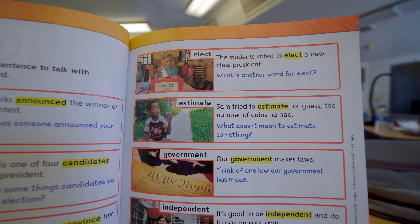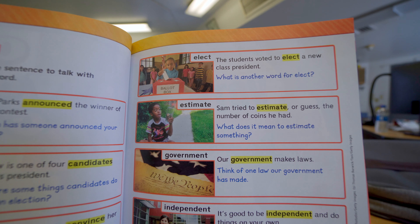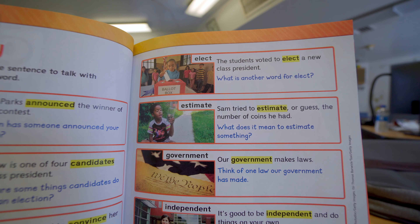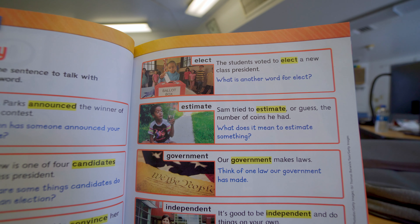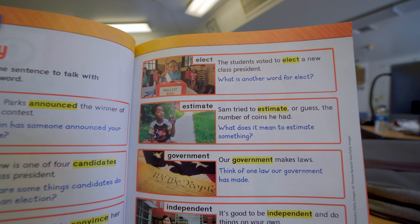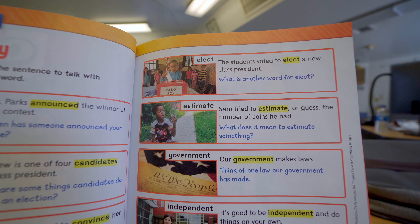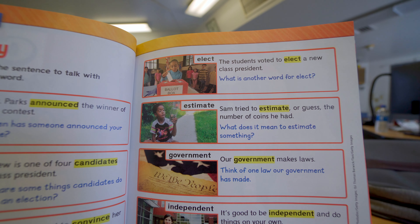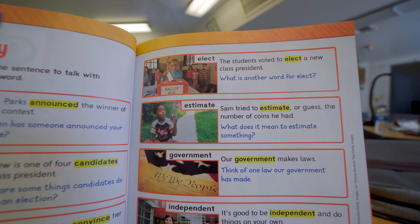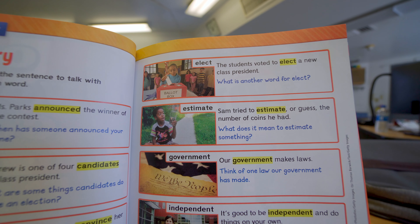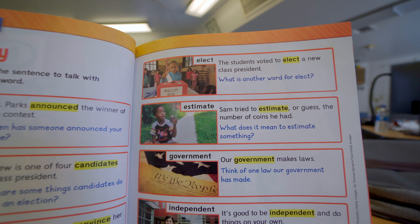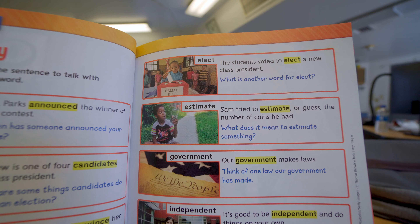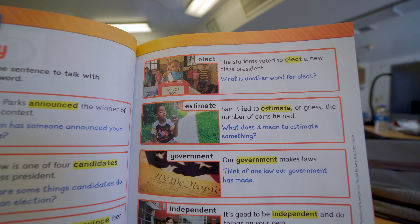Our next word is elect. The students voted to elect a new class president. Elect means to choose, kind of like decision. But when you elect somebody, that's the person that you have chosen. So if you elect somebody, that means you have chosen them — that's the one.